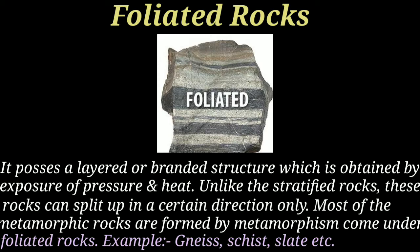Foliated rocks can be split in one direction — either horizontally or vertically. This is different from stratified rocks, which split in both directions along horizontally and vertically. Foliated rocks can only be split in one direction, either horizontally or vertically.